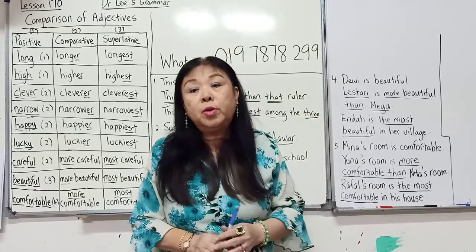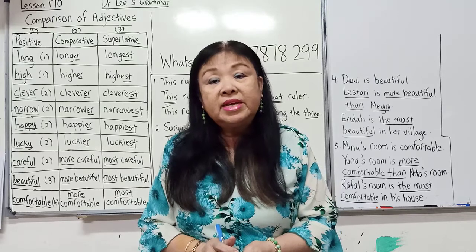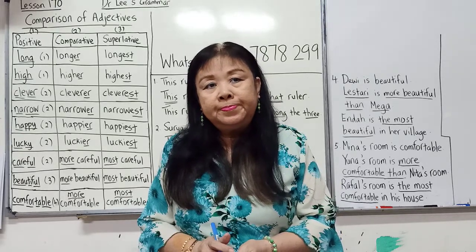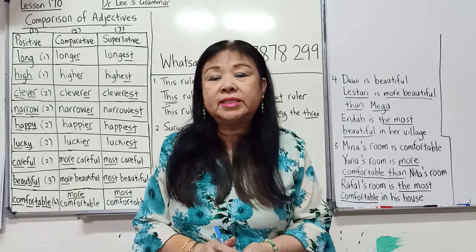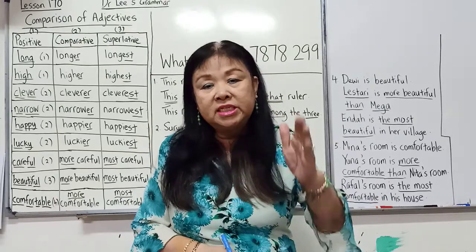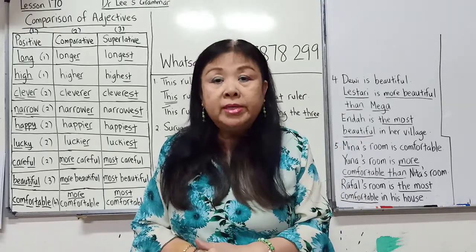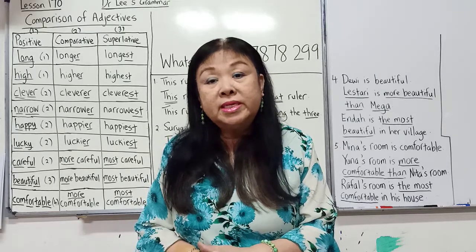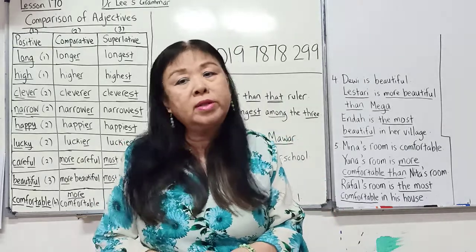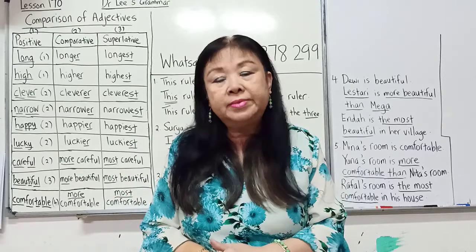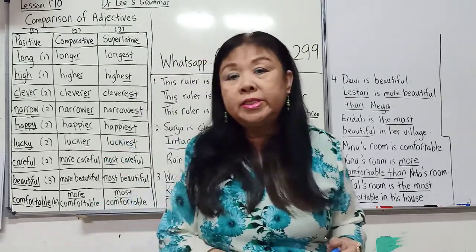You can see on the whiteboard here my WhatsApp number: 019-7878-299. My book is already in the printing process. If you want to buy the book, you must WhatsApp me now and let me know, because I have ordered a little bit extra but not a lot. So if you want, please be quick. Just WhatsApp me now and let me know how many copies you want. There is still time.